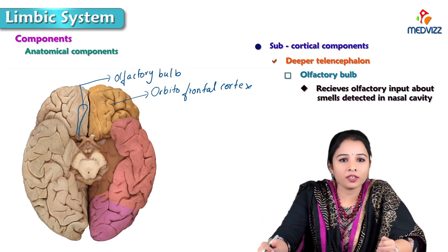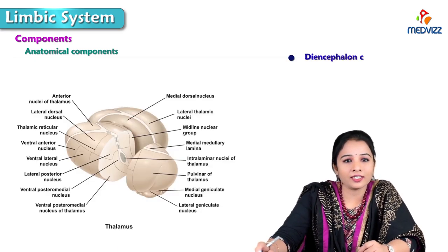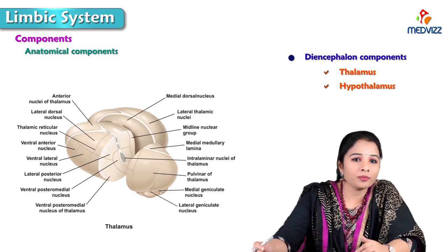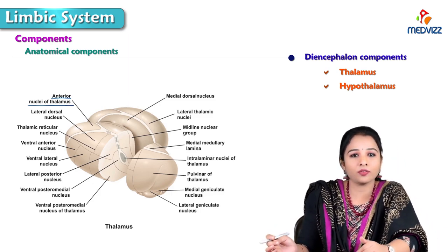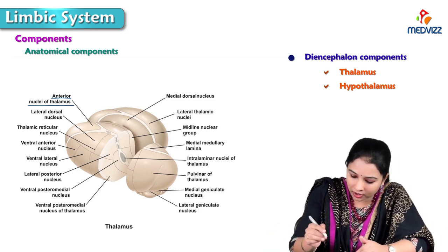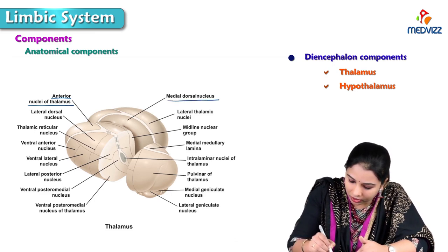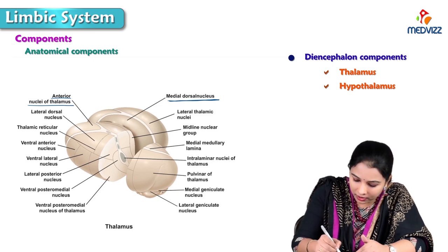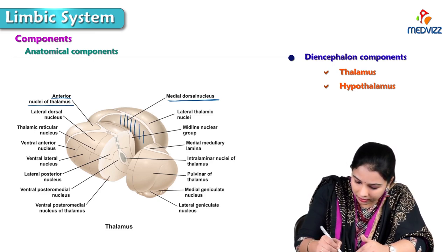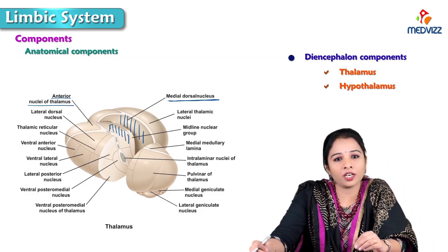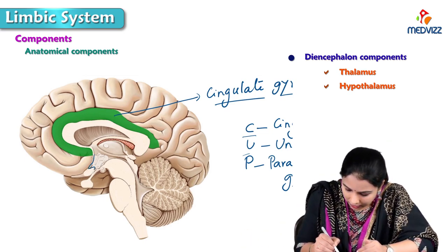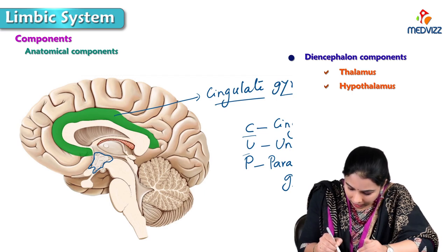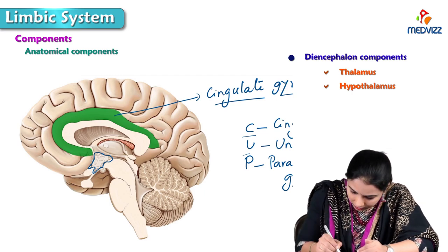These are the subcortical components. The diencephalon components include the thalamus and hypothalamus. From the thalamus, specifically the anterior nuclei of the thalamus, which are present on the anterior end of the thalamus. Then the dorsomedial nucleus — here we can see the medial dorsal or dorsomedial nucleus present on the medial side. The next component of the diencephalon is the hypothalamus, present here in front of the lamina terminalis, and here is the septal area.